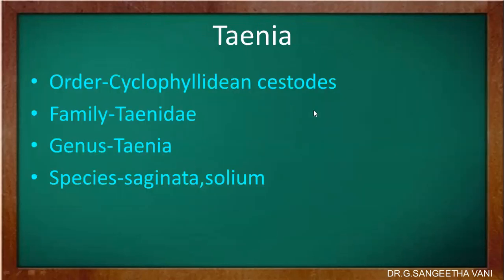Now we are going to discuss about Taenia. Taenia comes under the order Cyclophyllidea, cestoidea; family Taeniidae; genus Taenia; species Taenia saginata and Taenia solium.